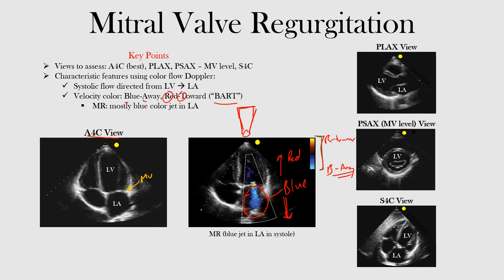Because we have a blue color occurring during systole — as the left ventricle is contracting — blood is coming back into the left atrium. That's what we expect to see with mitral insufficiency or mitral regurgitation: most of that color jet in the left atrium appears blue during systole. The systolic flow is directed from the left ventricle back to the left atrium.